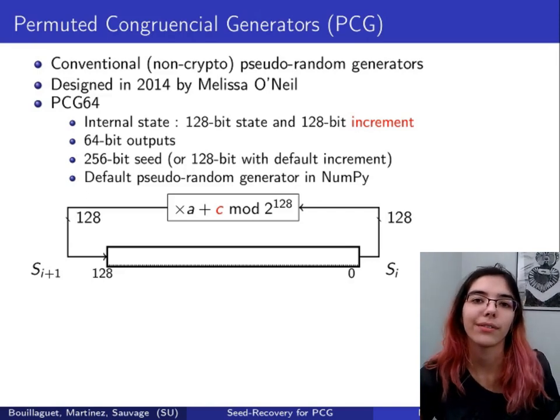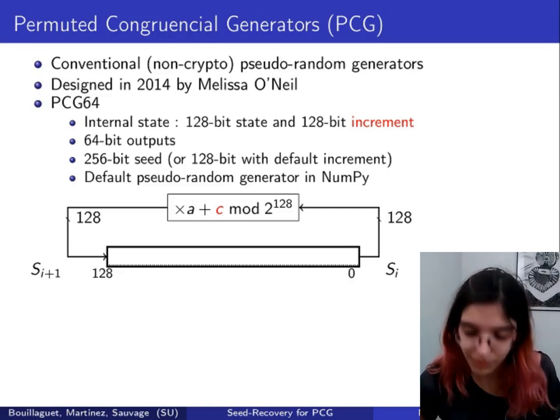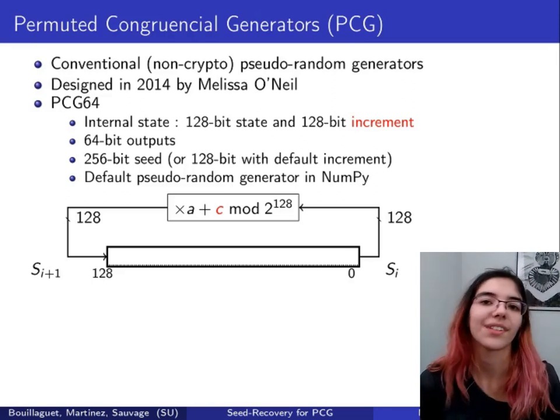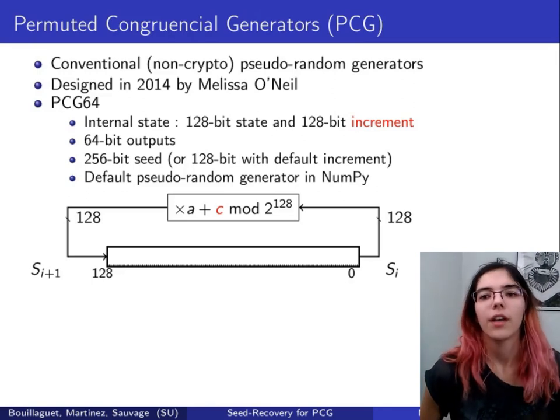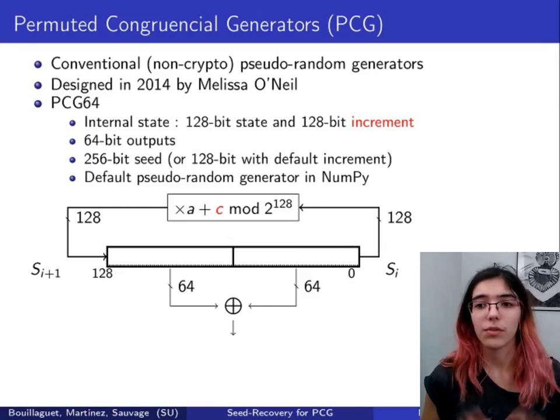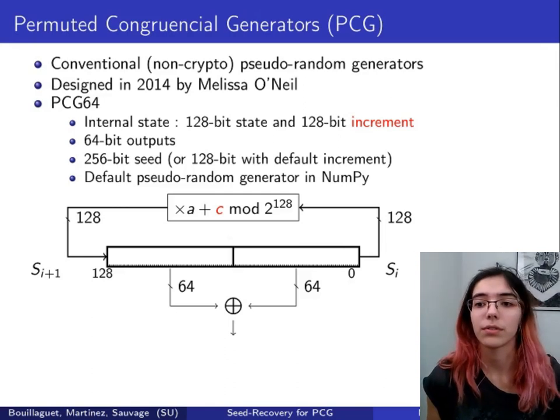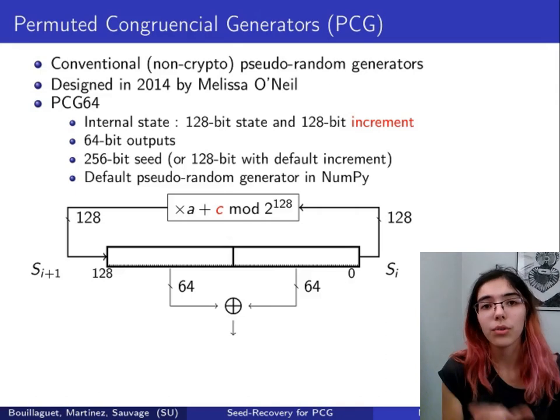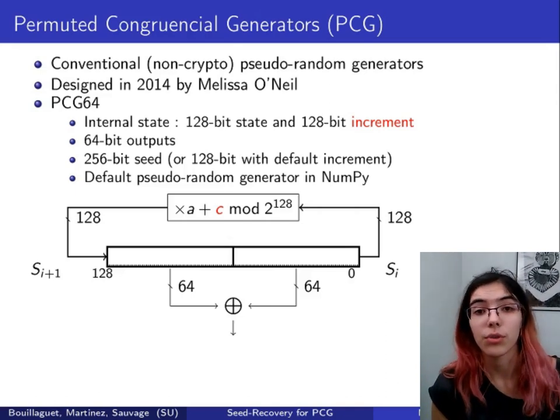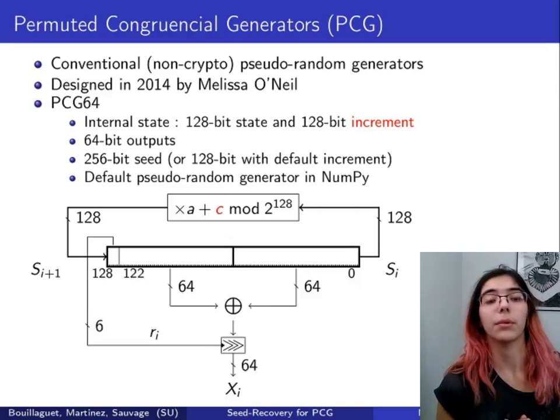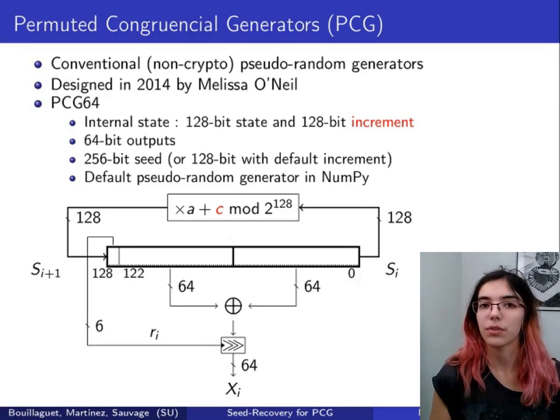Once it's done, a 64-bit output is extracted from this internal state. The two 64-bit halves of this state are XORed, and the result is rotated by a variable amount.